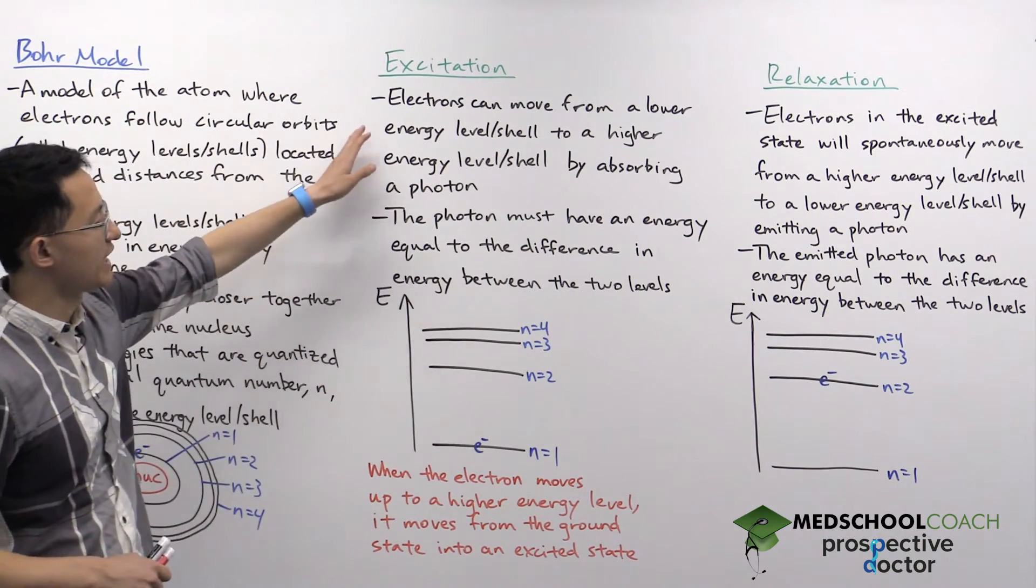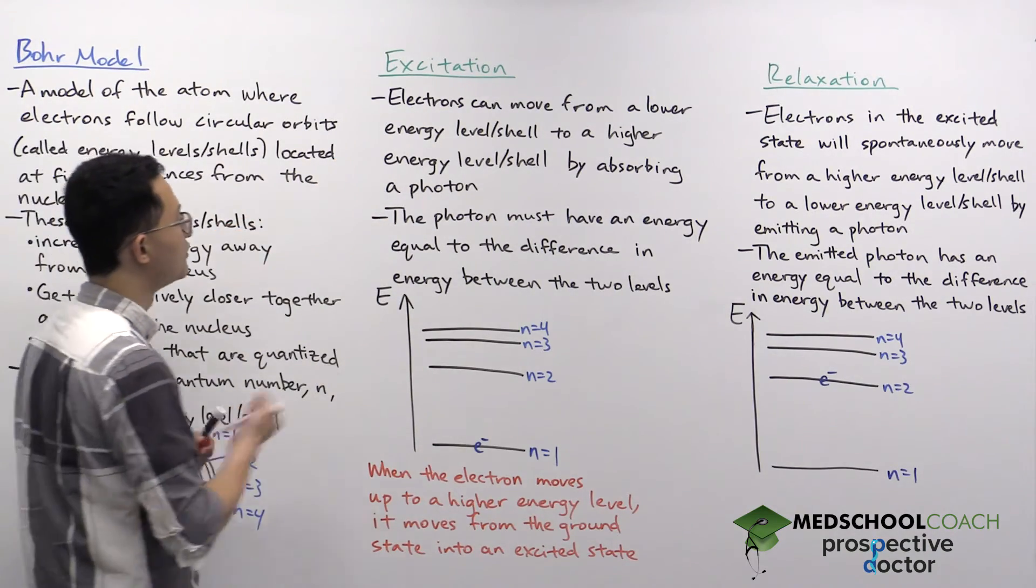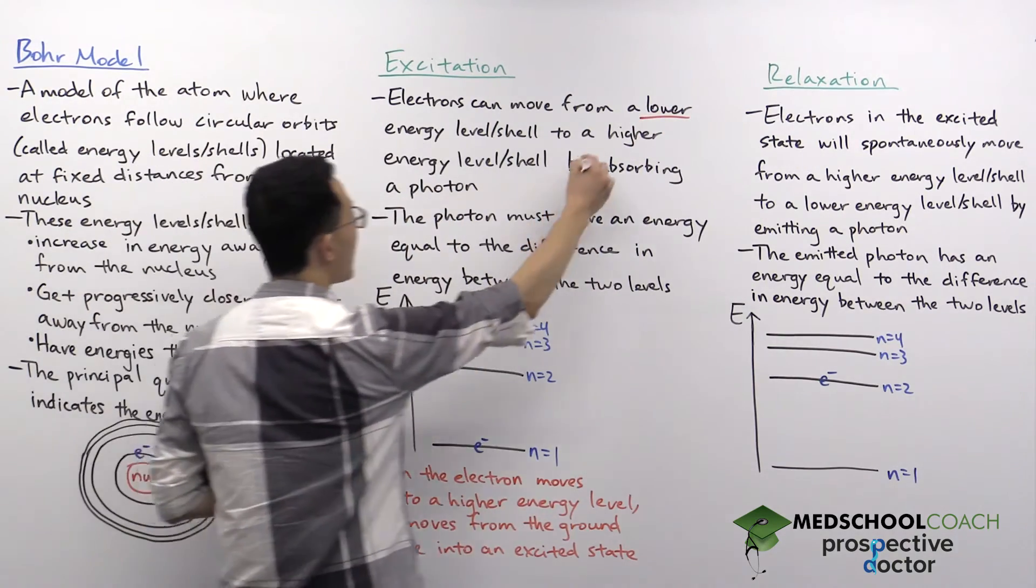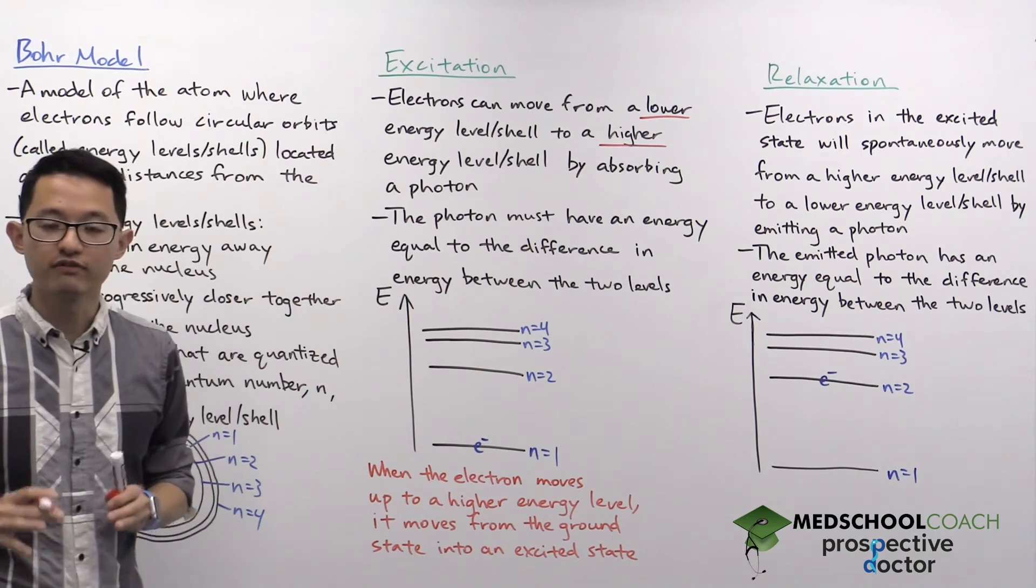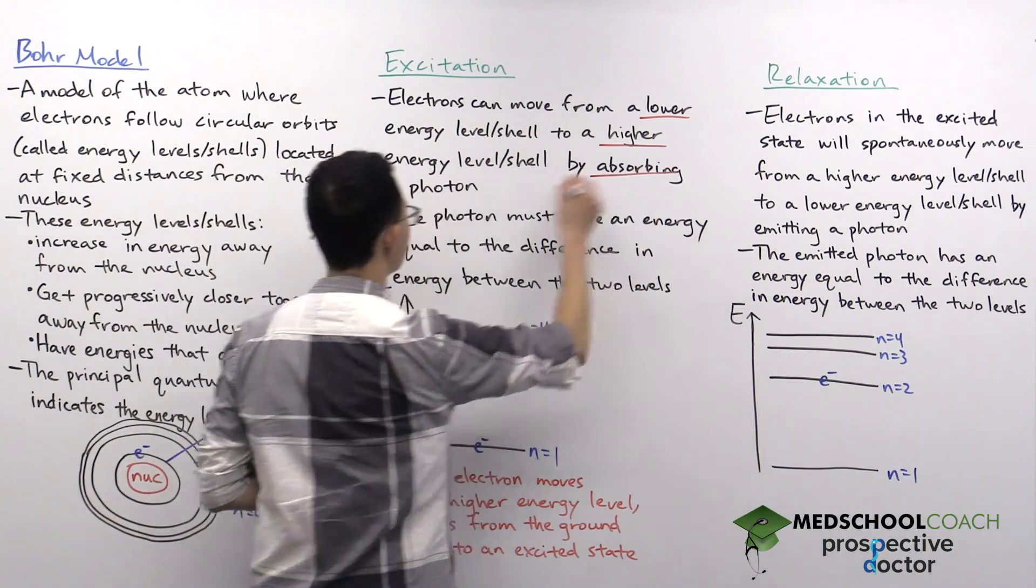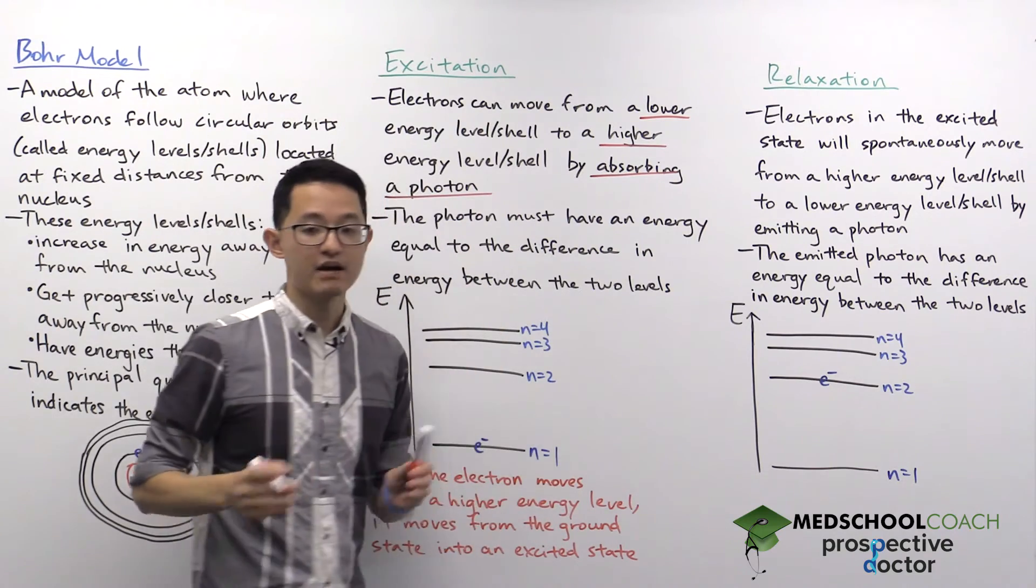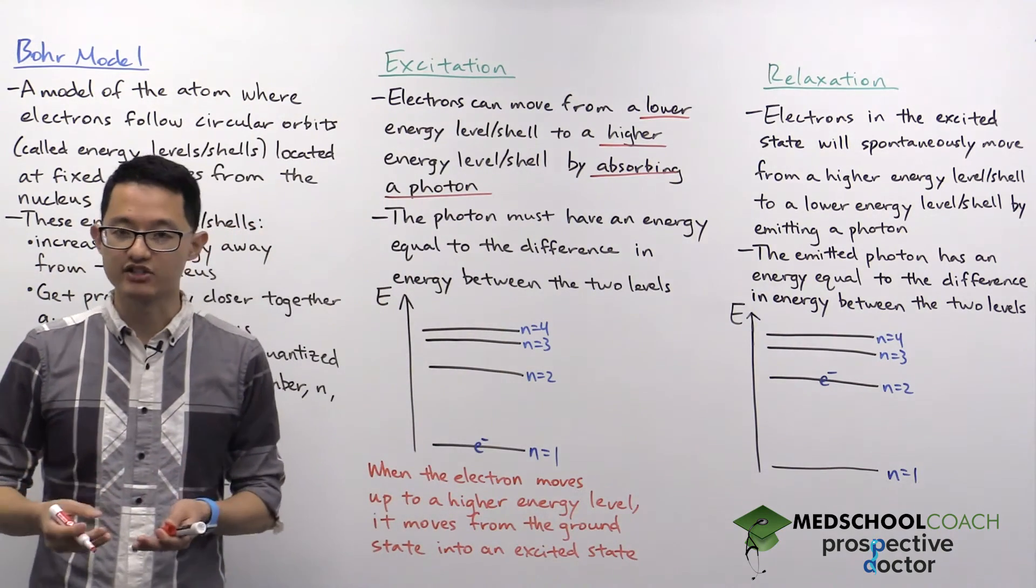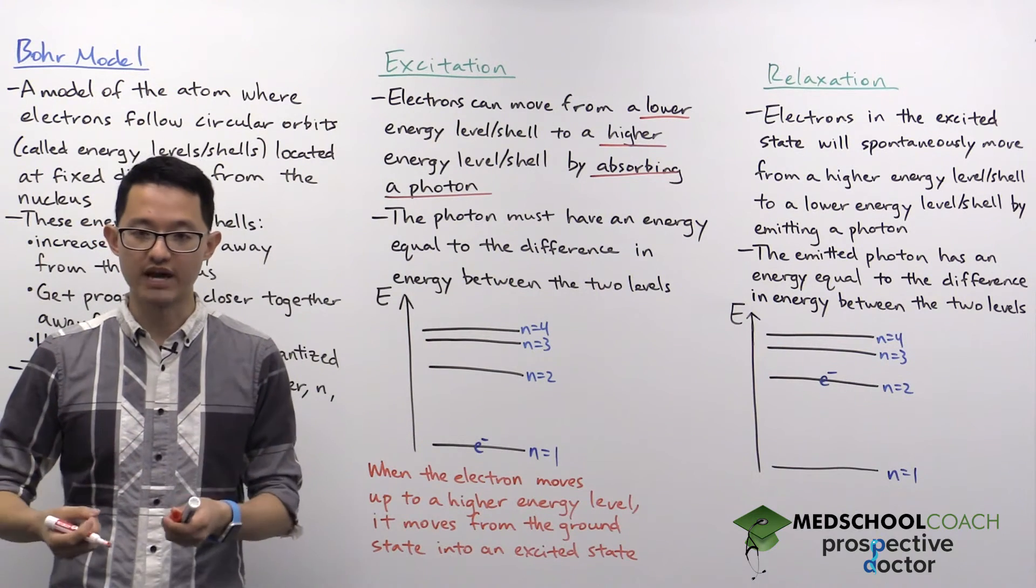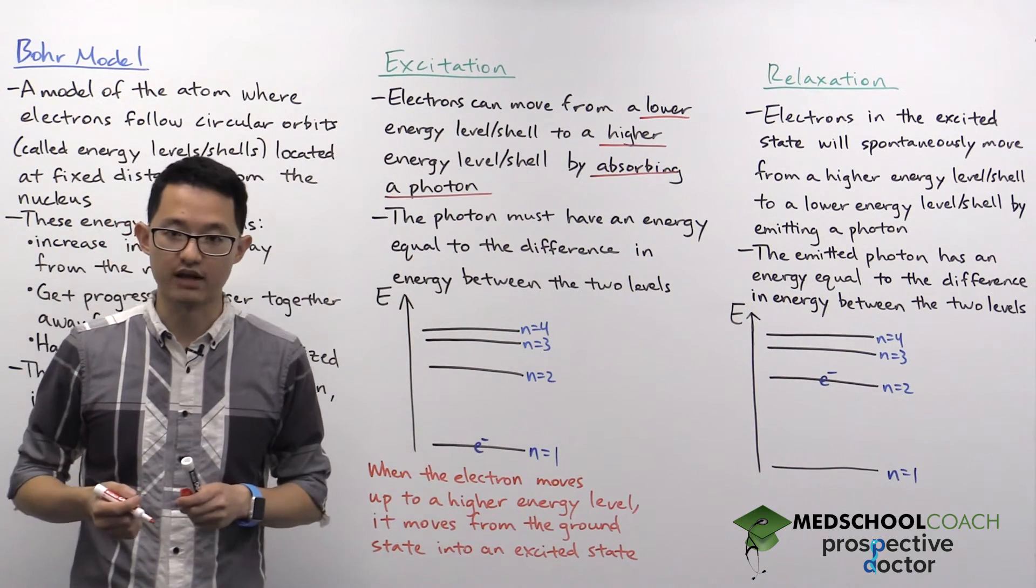In excitation, an electron is going to be able to move from a lower energy level slash shell to a higher energy level slash shell. In order for this process to occur, the electron has to absorb a photon. And that makes sense because at a lower energy shell, you have less energy than at a higher energy shell. So you must absorb energy to move up to a higher level.